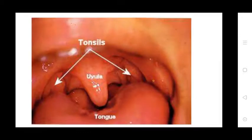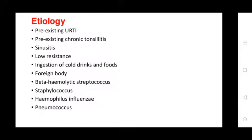Etiology of tonsillitis includes pre-existing URTI, pre-existing chronic tonsillitis, low resistance, ingestion of cold drinks and foods, and foreign bodies. Causative organisms include beta-hemolytic streptococcus, Streptococcus, Haemophilus influenzae, and Pneumococcus.